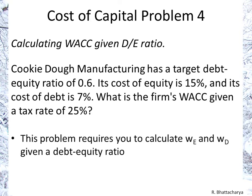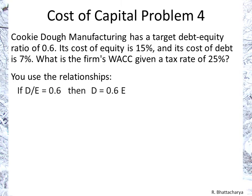For this problem, we need to calculate the weight of equity and the weight of debt. We can calculate them through the debt-equity ratio and then plug those values into WACC. If debt to equity is 0.6, we can cross-multiply and rearrange, so that debt is equal to 0.6 times equity.